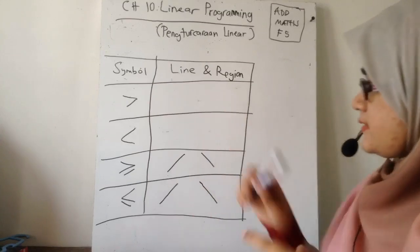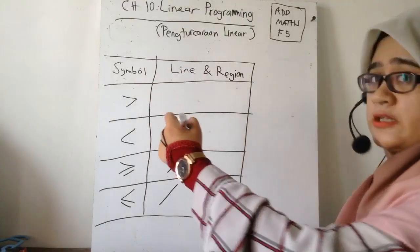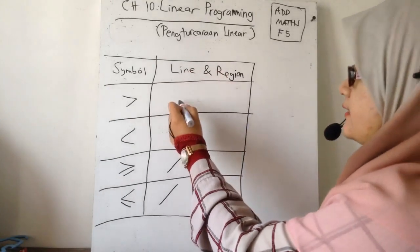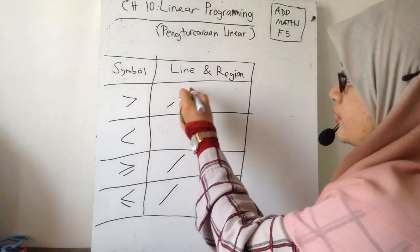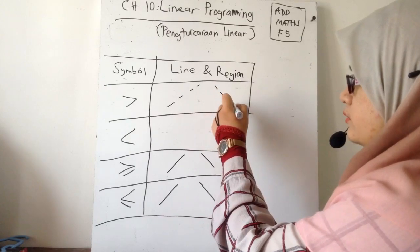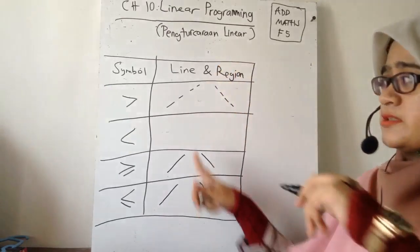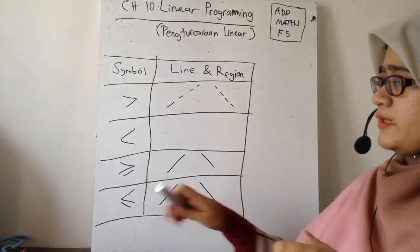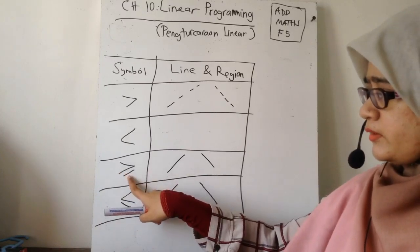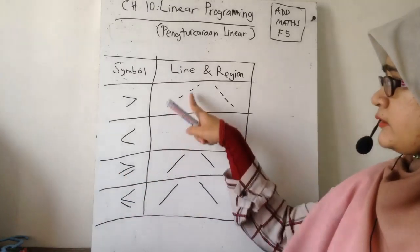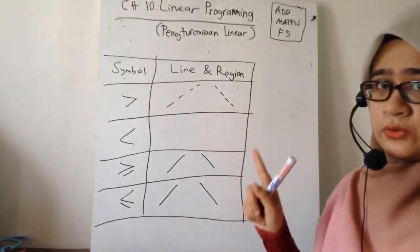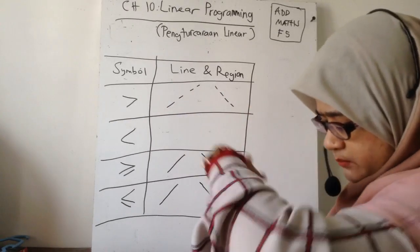Untuk yang first - more than and equal to - dia punya line akan jadi dotted. Cuma disebabkan dia tak ada yang equal - more and equal - sebab tu dia tak ada straight line, dia ada potong-potong. Line ni pun sama.